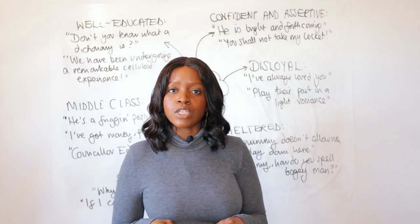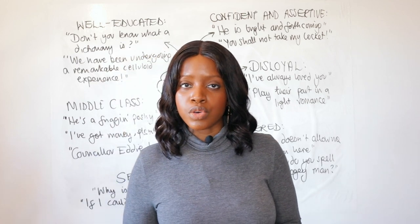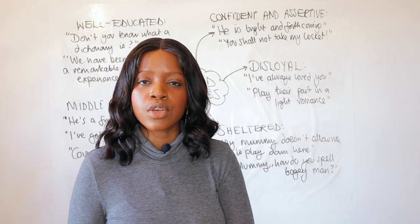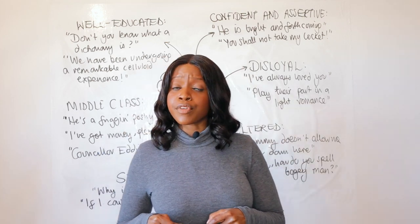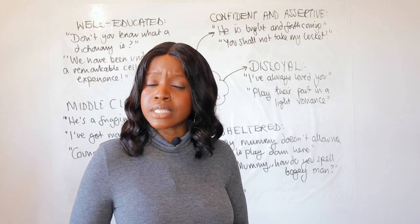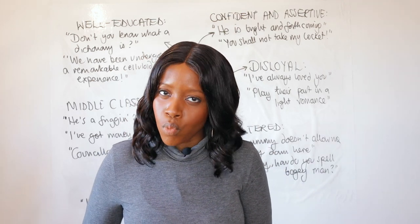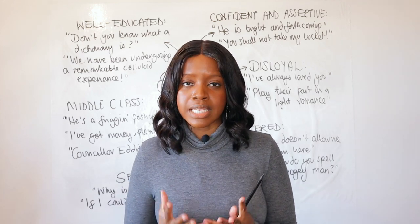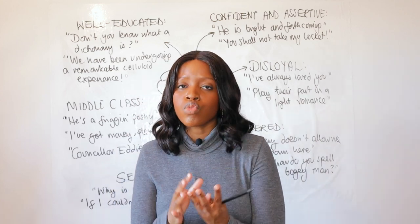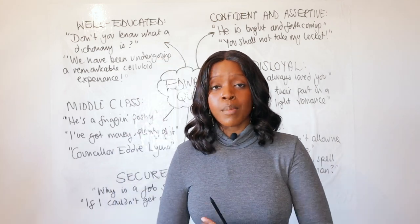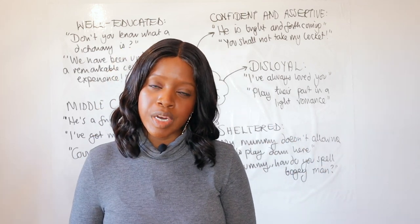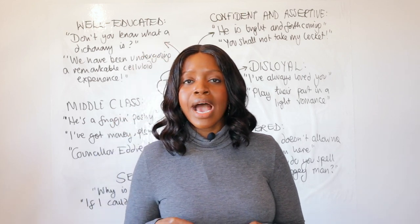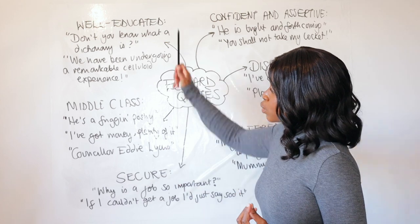His assertiveness is also illustrated when in school he refuses to give up the locket that Mrs Johnstone had gifted him, standing up against his teacher — a figure of authority — saying 'You shall not take my locket!' This exclamatory sentence shows Edward is very assertive and stands up for what he believes is right. He's confident and sure of his place in the world in a way many working class characters are not — even Mrs Johnstone doesn't have the same confidence and assertiveness, the result of facing the disappointments of being a working class woman that Edward is sheltered from.